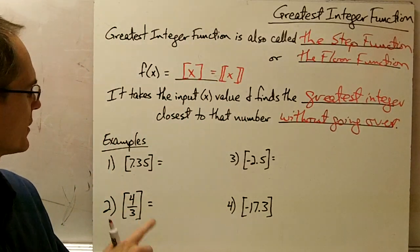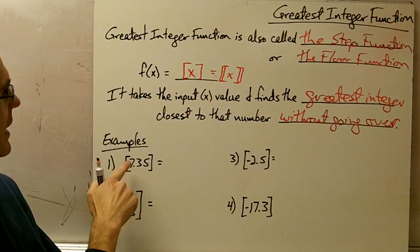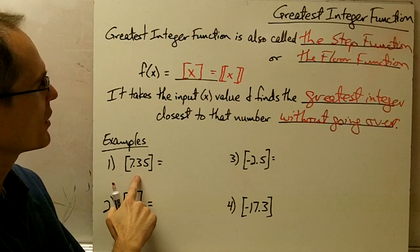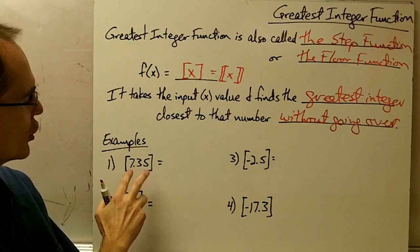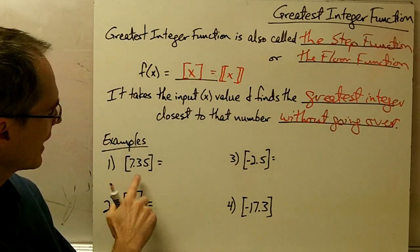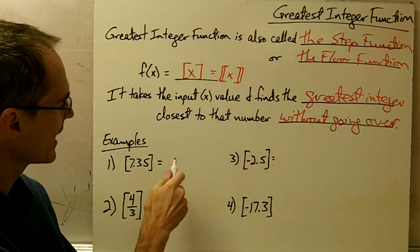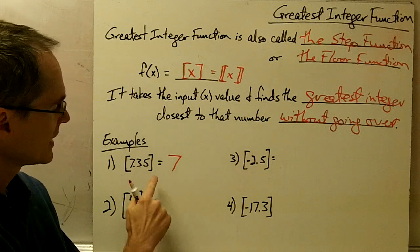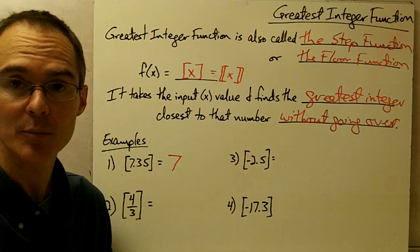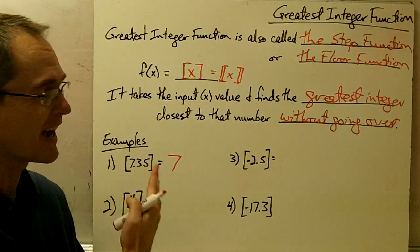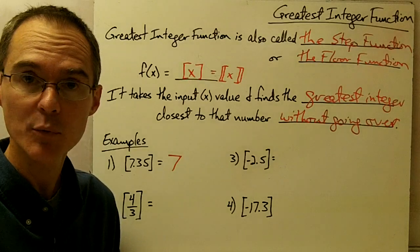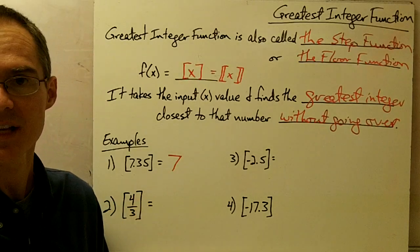Let's take a few examples. Example number one: the greatest integer of 7.35. We want the greatest integer closest to 7.35 that doesn't go over 7.35. The number 7 is the greatest integer that is not larger than 7.35. The next closest integer would be 8, but 8 is greater than 7.35, so our answer here is 7.